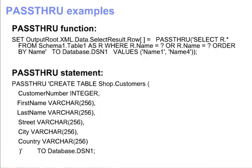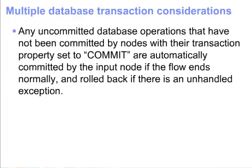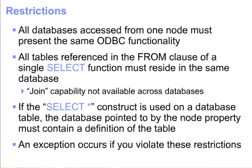The pass-through statement evaluates an expression and executes the resulting character string as a database statement. This example creates the customers table in schema 'shop' in database 'dsn1'. Regarding transactionality of database operations: any database operations that have not been committed by nodes with their transaction property set to commit are automatically committed by the input node if the flow ends normally. Likewise, the database operations are rolled back if there is an unhandled exception.